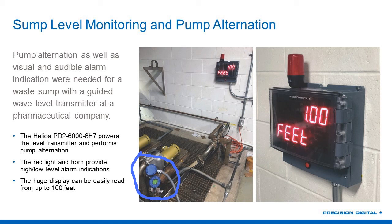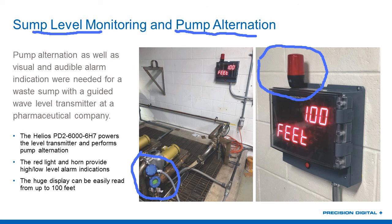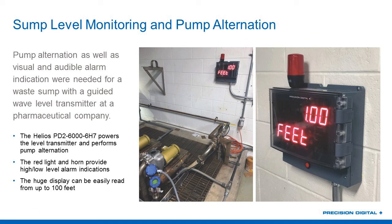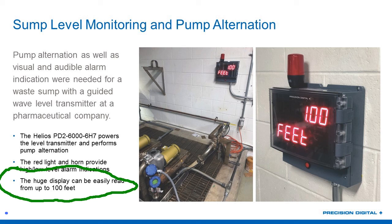In this particular case, once again we do have a guided wave radar device here. The customer wanted to not only monitor that sump level and provide pump control, but they wanted an alarm. Joe had mentioned the red light and horn that we have here — that horn is 85 decibels, so a very loud horn and light. We're using one of our Helios units, which are extremely bright displays — as we can see here, you can read it from 100 feet away. It's very commonly used in applications like this where you want to make sure you can see that reading from a long distance away.